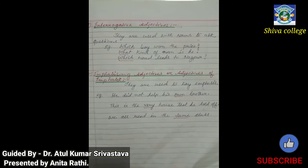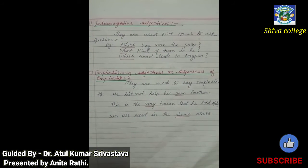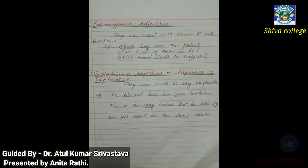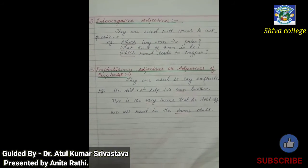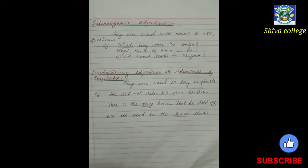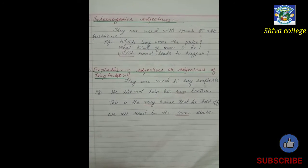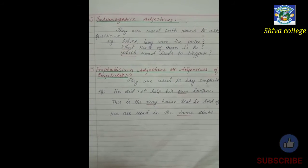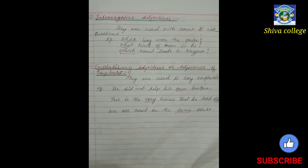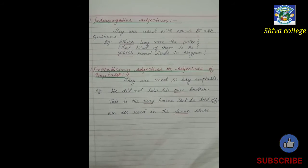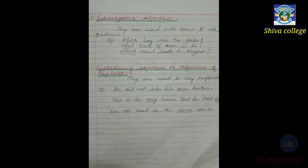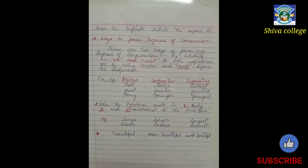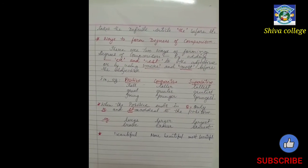In 'he did not help his own brother', emphasis is put on 'his own brother'. In 'this is the very house', emphasis is on that particular house. In 'same class', a similar word is being used. So emphasizing adjectives, or adjectives of emphasis, means putting emphasis or stress on a particular word. Next are ways to form degrees of comparison — there are certain ways to form them.